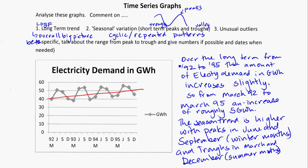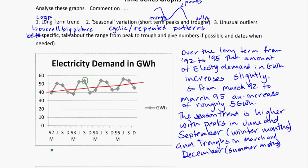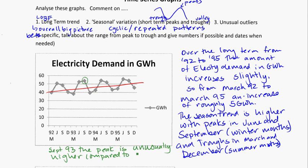As far as anything unusual, there's not really much to talk about. You could note that the value for September is slightly higher than June in one year, whereas most of the time September is lower than June — so that could be a slight outlier. So September 93, the peak is unusually high compared to June, which is unusual compared to the other three years given.